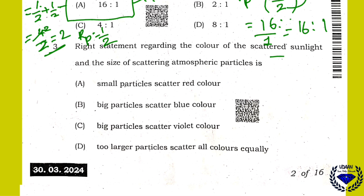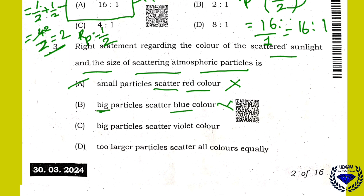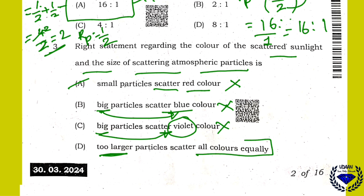Regarding the color of scattered sunlight and size of atmospheric scattering particles: small particles scatter red light — this is wrong because smaller particles scatter smaller wavelength of light; since red has high wavelength it will not scatter. Big particles scatter blue light — wrong because blue has small wavelength. Small particles scatter small wavelength. Two larger particles scatter all colors equally, that means white light equally. So the correct answer is: large particles scatter all colors equally.